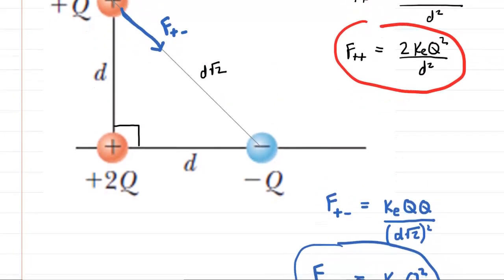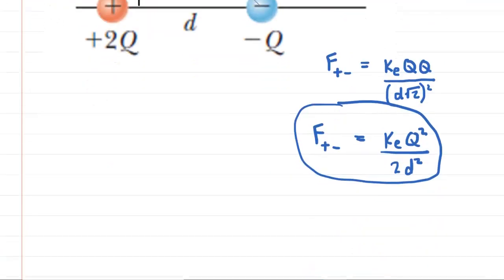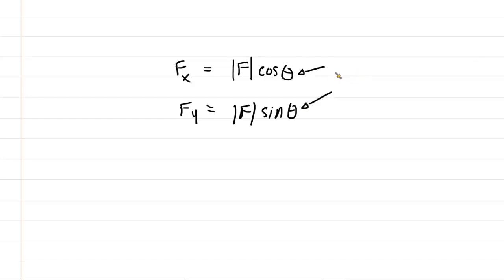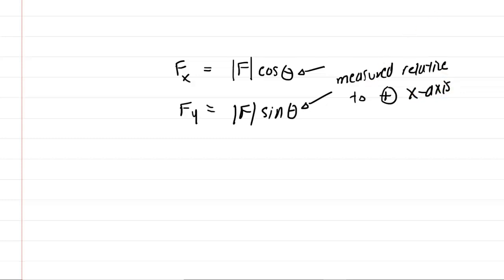Now we have the magnitudes of both forces, but we have to break them into components. As a review: the x component of a force equals its magnitude times the cosine of an angle, and the y component equals the magnitude times the sine of an angle. We have to be really careful when choosing this angle — many students make a mistake here. The correct angle must be measured relative to the positive x-axis. Let's set up a table to keep track of all this information.